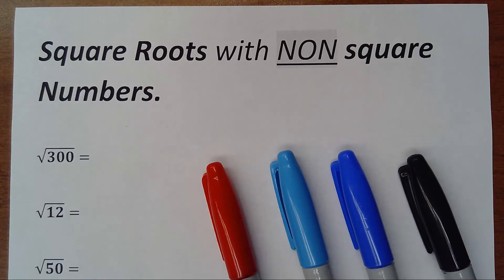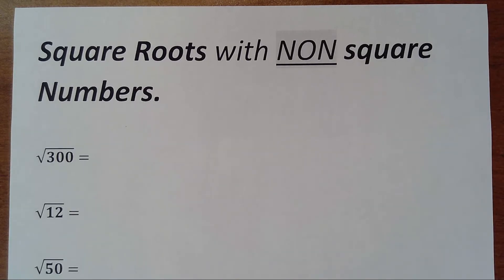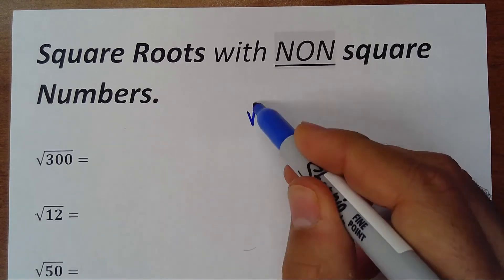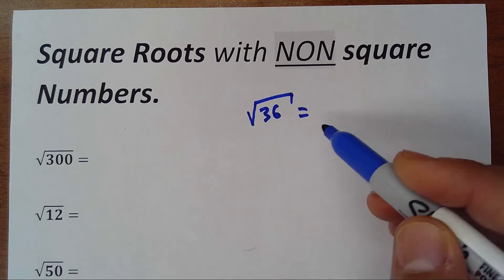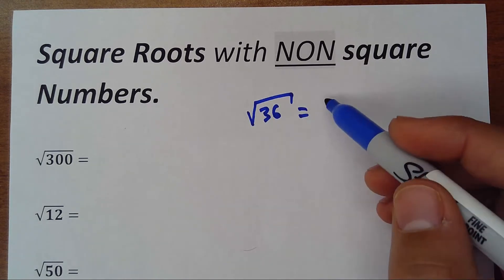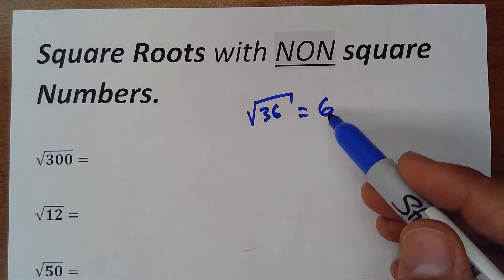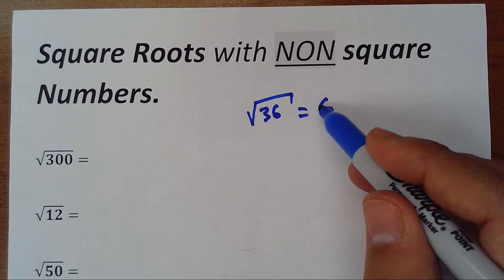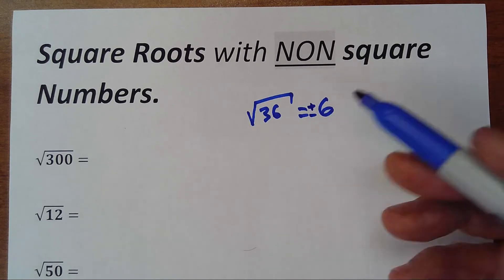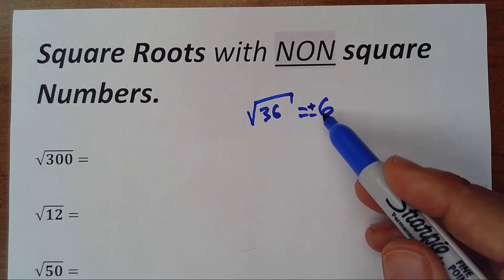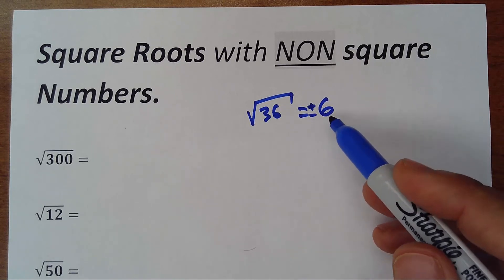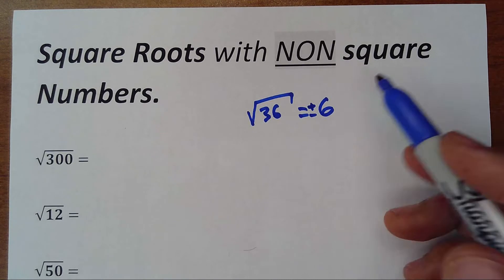Here we're going to look at square roots with non-square numbers. When you have the square root of 36, this one is very easy because it equals 6. Two numbers that multiply to give you 36 could be 6 or negative 6, so usually the answer is plus and minus 6, but we don't use that in middle school and high school. We just put the positive 6.